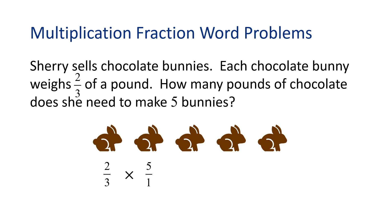Multiplying straight across gives us two times five in the numerator and three times one in the denominator. Performing the multiplication, we get ten over three, or ten-thirds. Ten-thirds pounds of chocolate sounds kind of funny, so let's change this improper fraction to a mixed number.